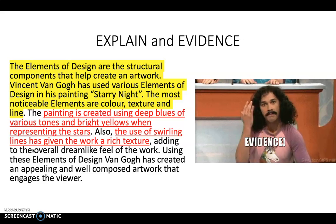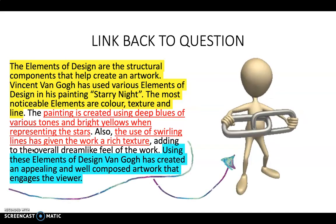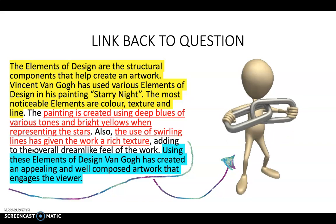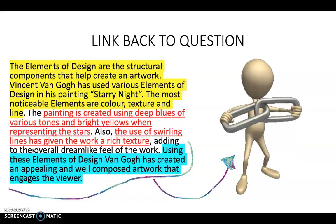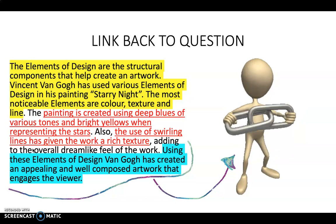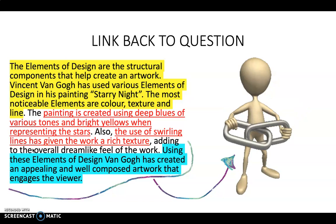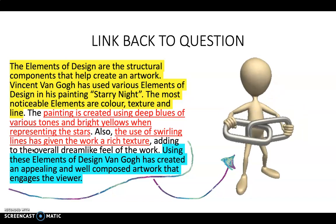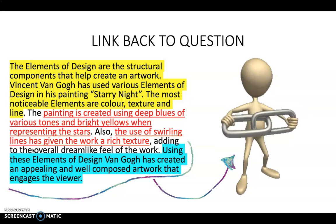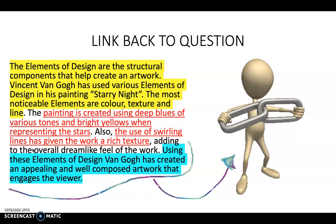You've broken the work down, and the last part you need to do is link it back to the question. It's all good and well saying there's colour, texture, and line in the work, but if you leave it there you're missing something. You've got to link it back to the question. For example: 'Using these elements of design, Van Gogh has created an appealing and well-composed artwork that engages the viewer.' Something that says he used those elements of design successfully, or that their use resulted in some other effect — whatever you feel. Just a sentence that sums it all up and ties it back to what the question is asking.